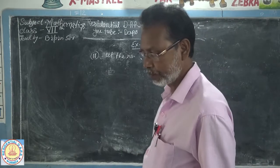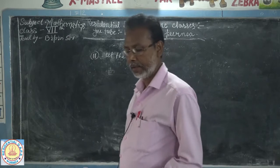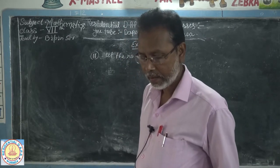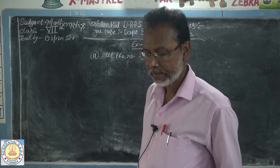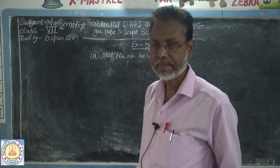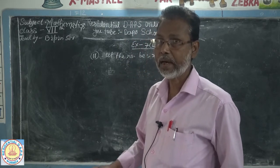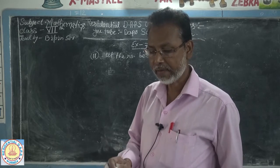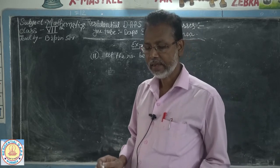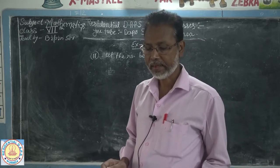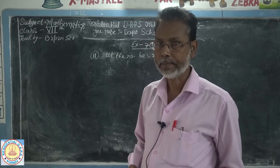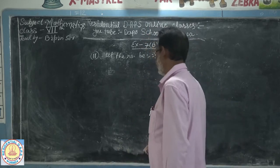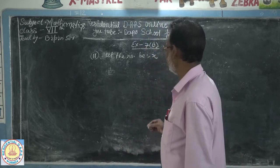Question number 11: the 5th part of a number when increased by 5 is equal to its 4th part decreased by 5.